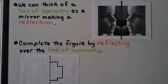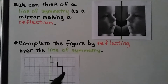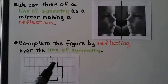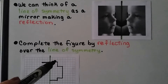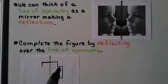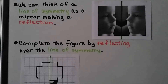We can think of a line of symmetry as a mirror making a reflection. We need to complete the figure by reflecting over the line of symmetry. Starting here, count how many square units it goes across — one, two, three — so we'll do three units across on that side. It comes down two units, so we'll go down two. Then it goes out two units, so we go out two units on this side. Count five units down and go five units down on this side. Then go in two units, down one square unit, and in. Now we've completed the figure by reflecting over the line of symmetry.